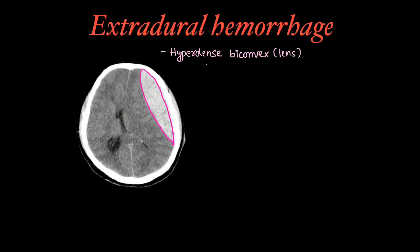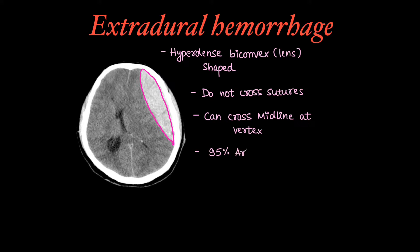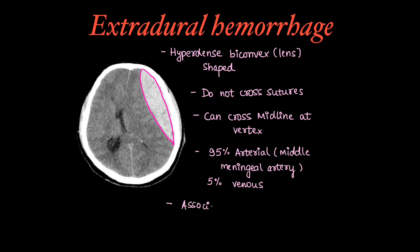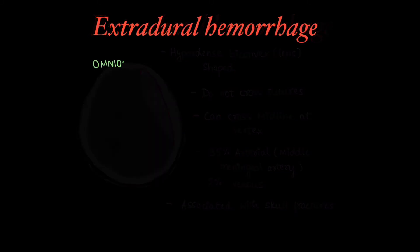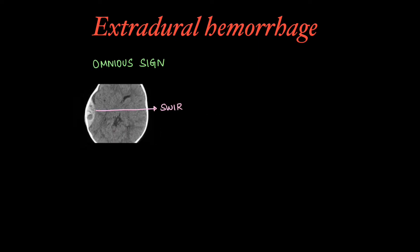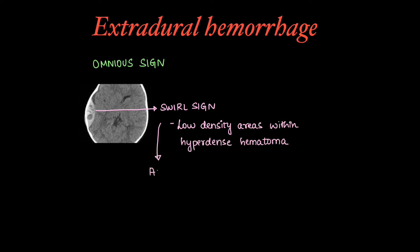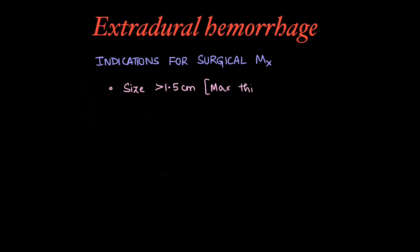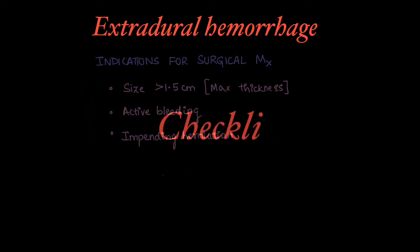Extradural hemorrhage appears on CT as a hyperdense bi-convex shaped collection which does not cross the sutures, but it can cross the midline at the vertex. 95% is caused by arterial causes where the middle meningeal artery is the cause, and 5% are venous causes. They are usually associated with skull fractures. An ominous sign of extradural hemorrhage is the swirl sign, which means low-density areas are present within the hyperdense hematoma, suggesting active bleeding. Indications for surgical management include size more than 1.5 cm in maximum thickness, active bleeding, or impending herniation.